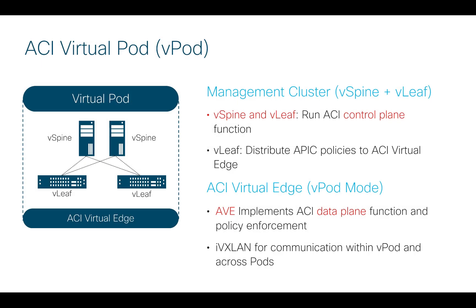Let's break down the components that comprise a virtual pod in ACI. The first is the notion of a virtual spine and virtual leaf. We're going to deploy V-spines and V-leafs on the ESX host — they're simply virtual machines. These provide your control plane functions so we can connect back over the WAN and talk to our physical ACI fabric. The second component is ACI Virtual Edge, or AVE, running in VPOD or cloud mode. AVE handles all of the data plane functions — this is where you build your port groups and connect your virtual machines so they can actually send traffic.